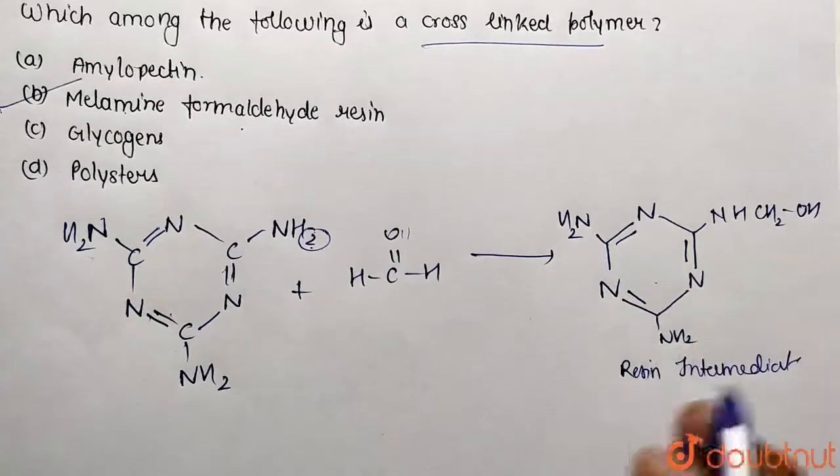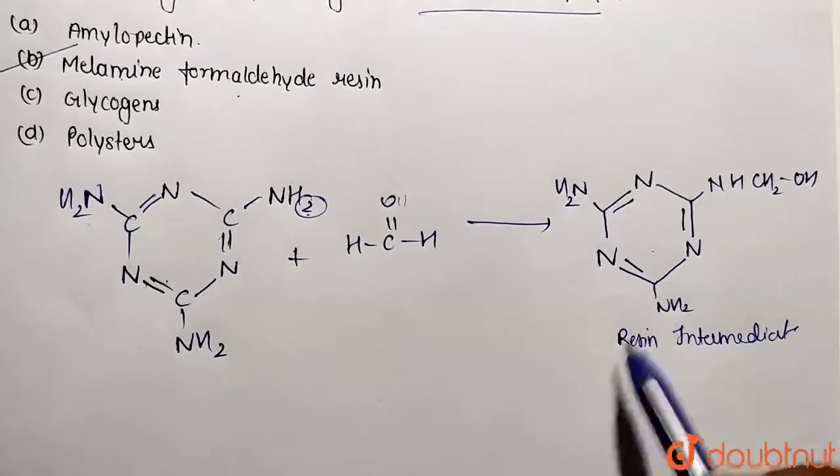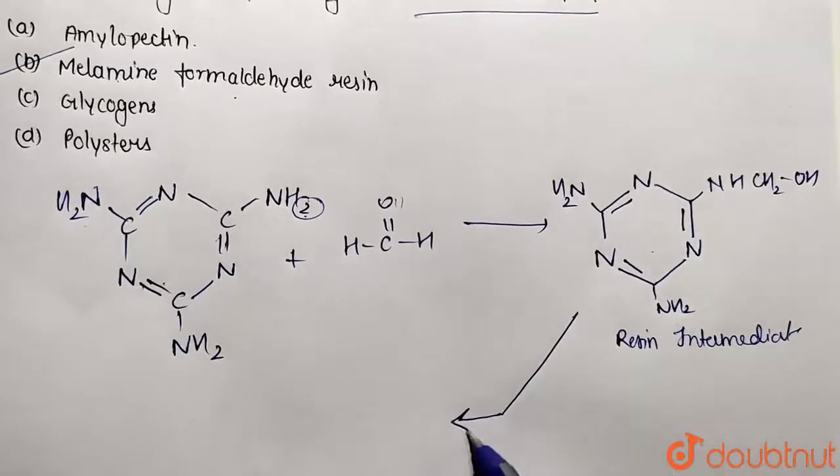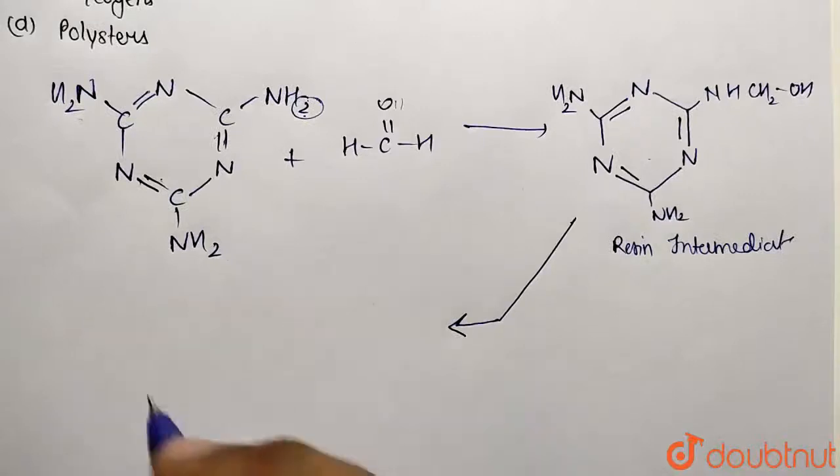Now when this repeated polymerization is going to take place of this product, we are going to have extended form of the chain which is shown over here. So this is being converted with the cross links.